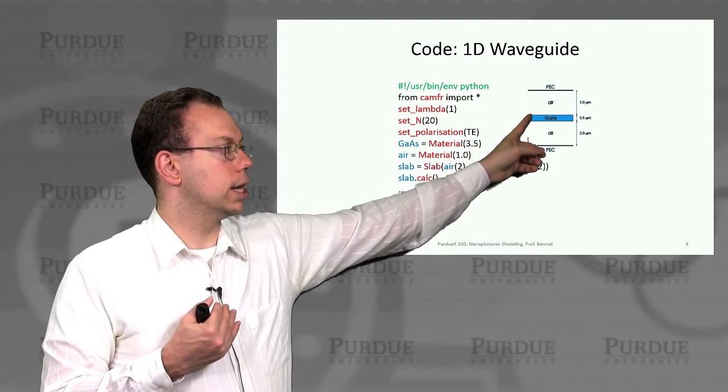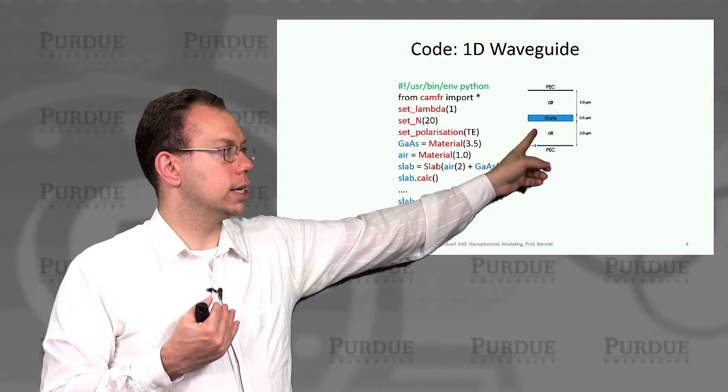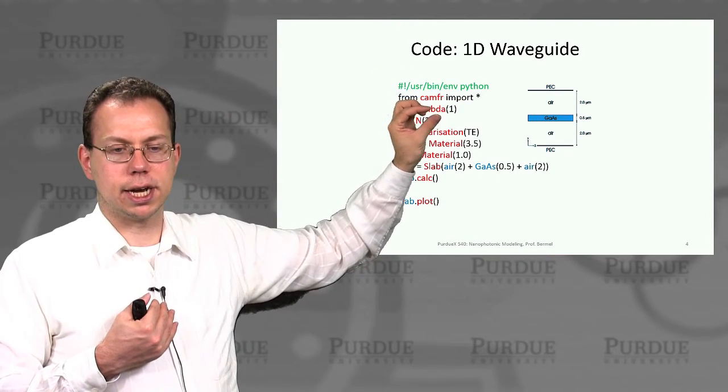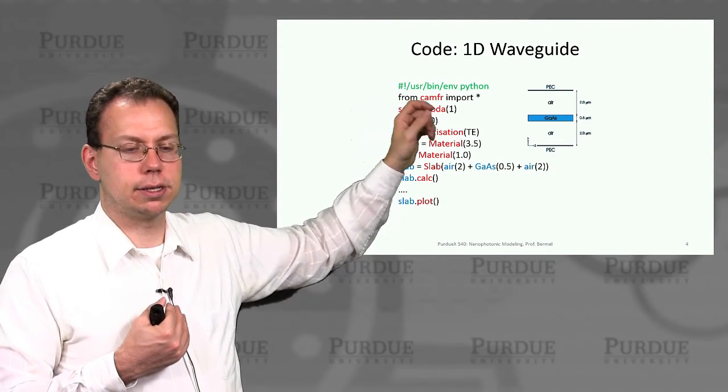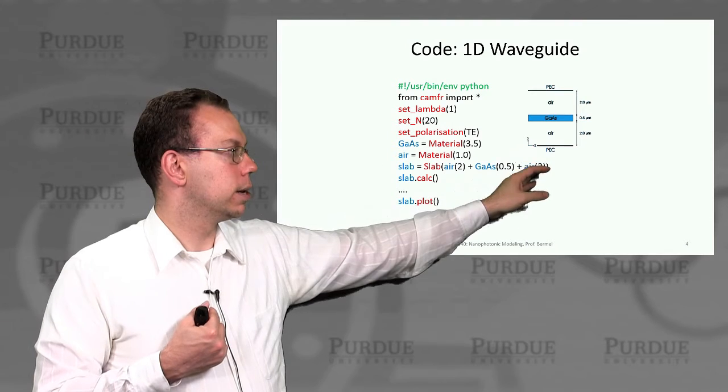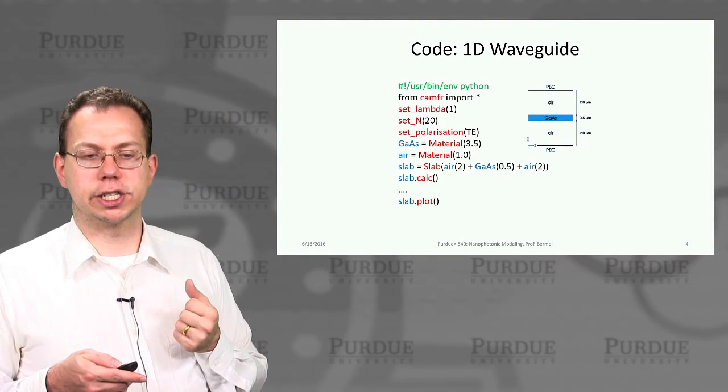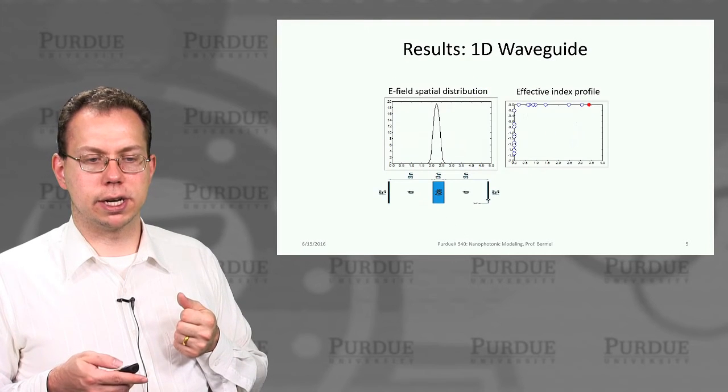And so then that's located here. And then we have a gallium arsenide thickness of half a micron. So this ultra-thin gallium arsenide perhaps made through epitaxial liftoff, plus some more air. And then you basically run the calculation for the transmission reflection of this 1D waveguide.